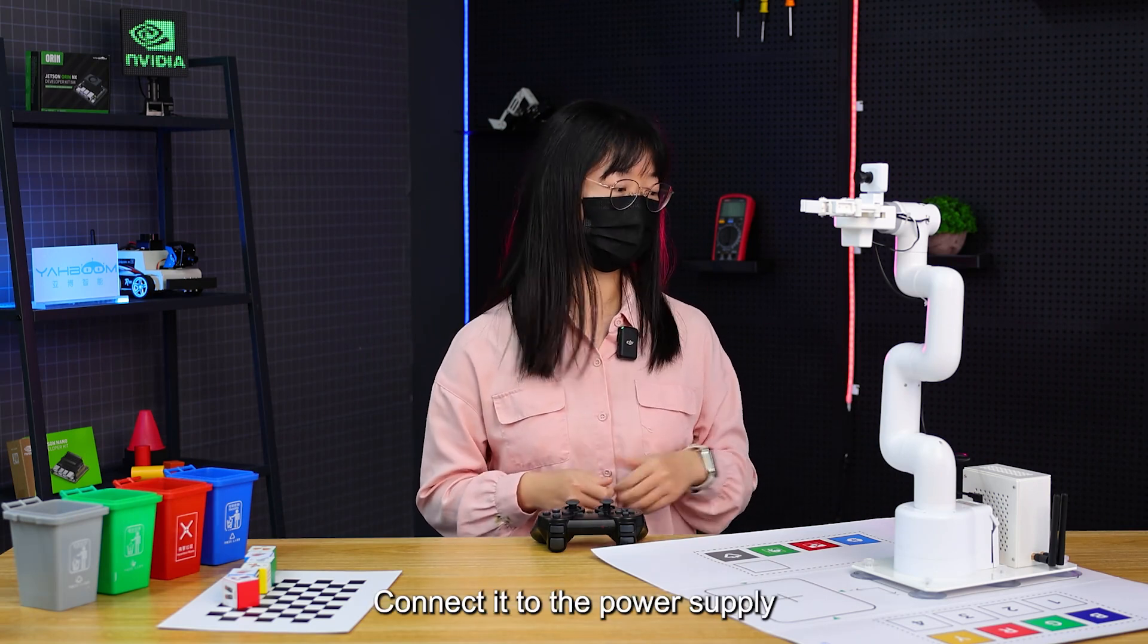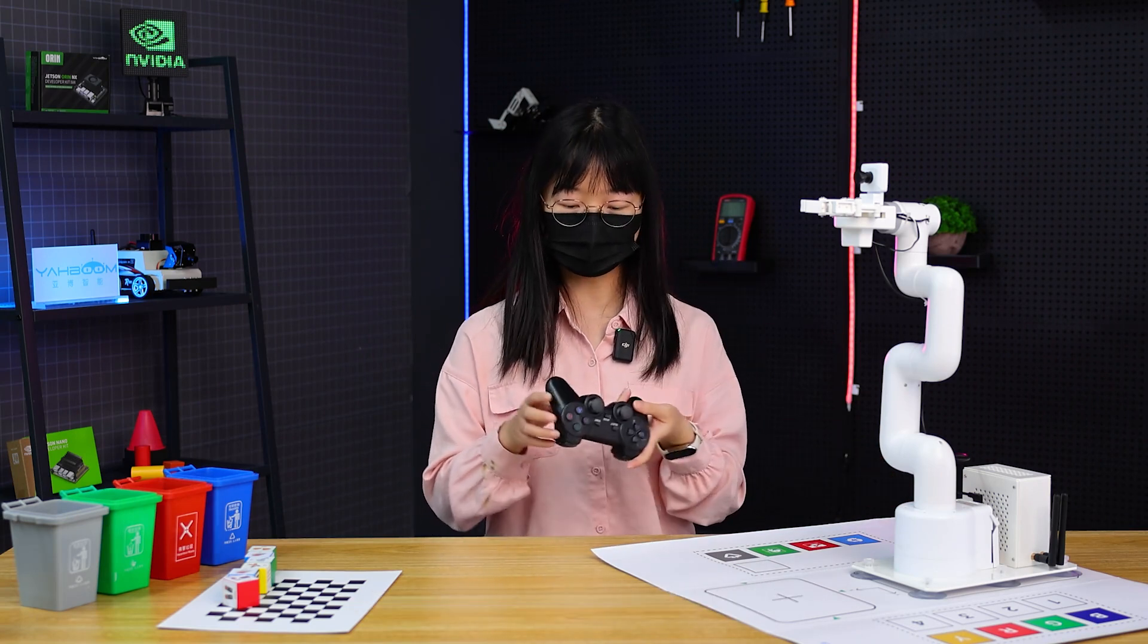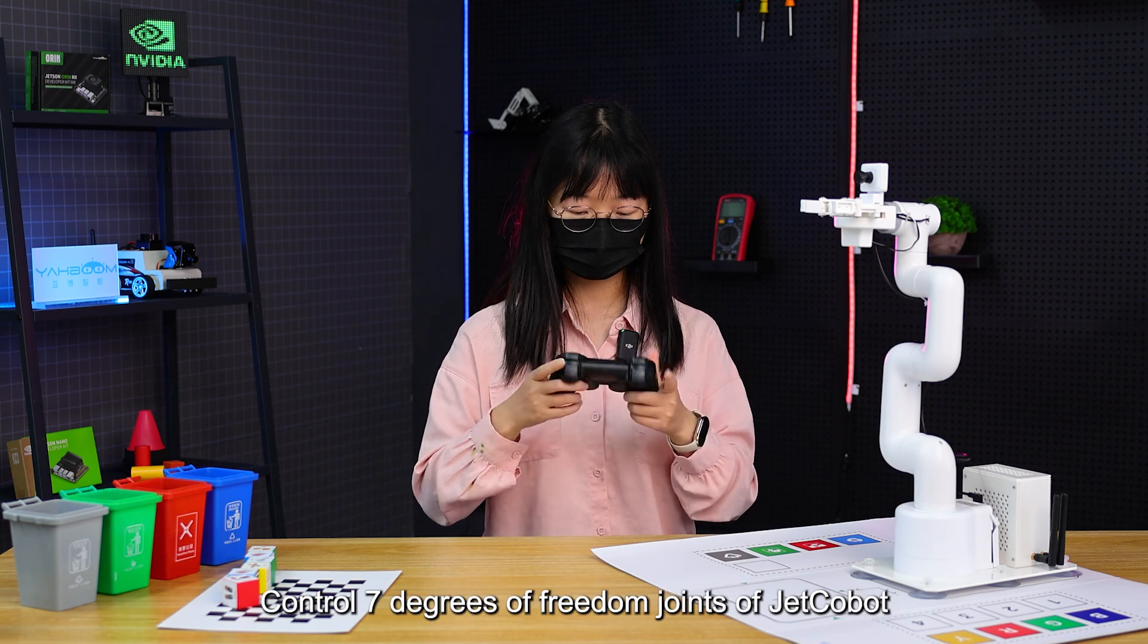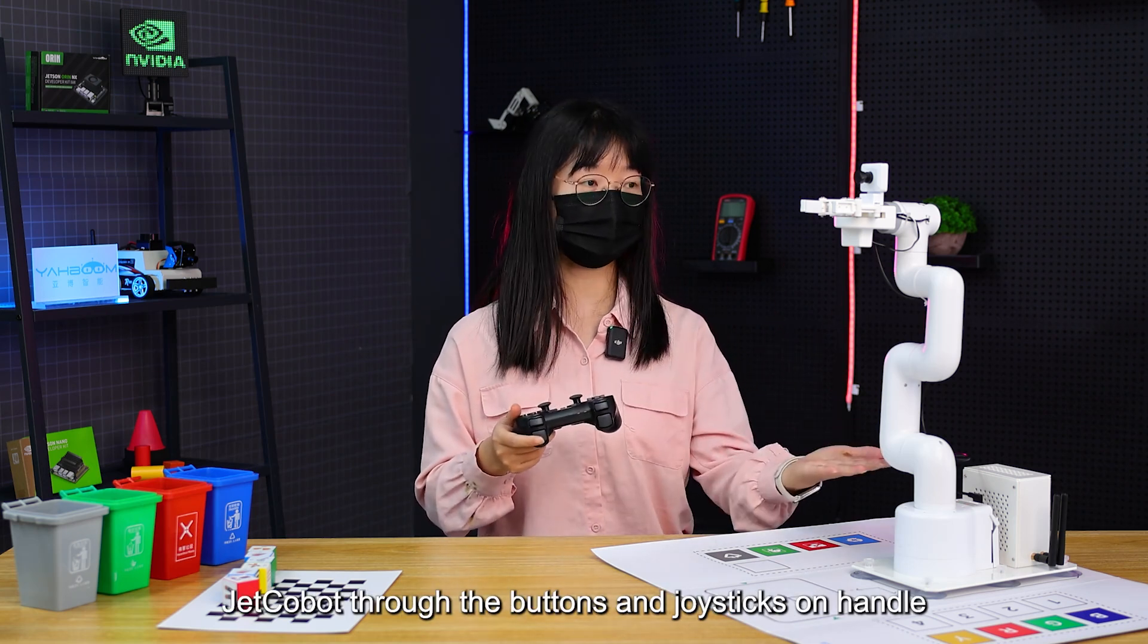After the assembly is completed, connect it to the power supply. We can control JetCobot by handle. Turn on the switch of the handle and control seven degrees of freedom joints of JetCobot through the buttons and joysticks on the handle.